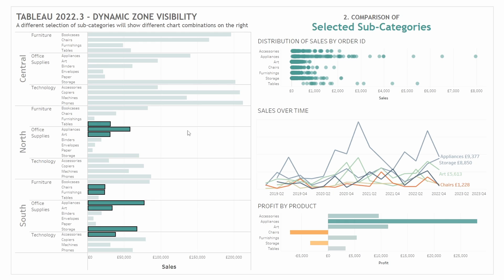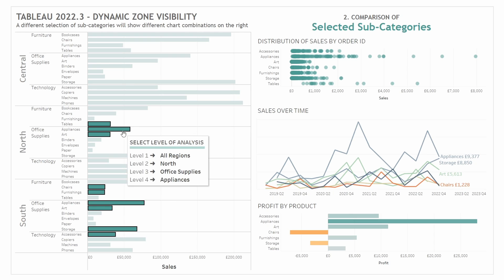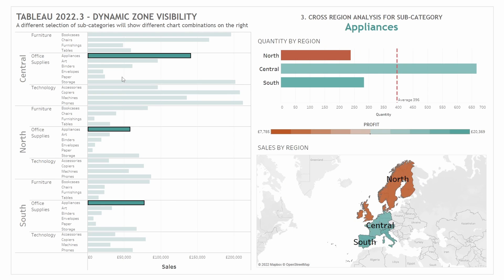Then we might want to focus on one particular product across the region — a cross-region analysis. So let's say you want to look at appliances here. It's going to select all three of those across the regions using the tooltip selections. Now we've got the third scenario, which is a cross-region analysis for the subcategory appliances.